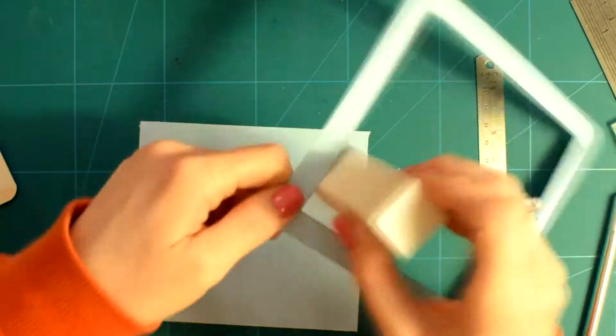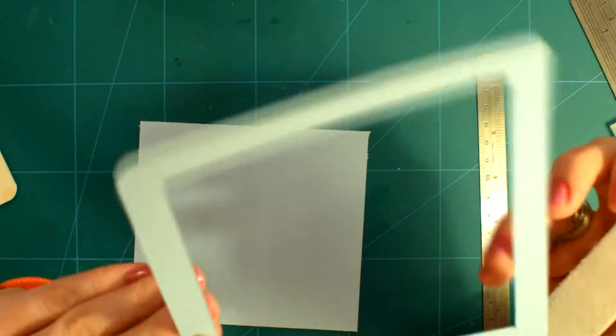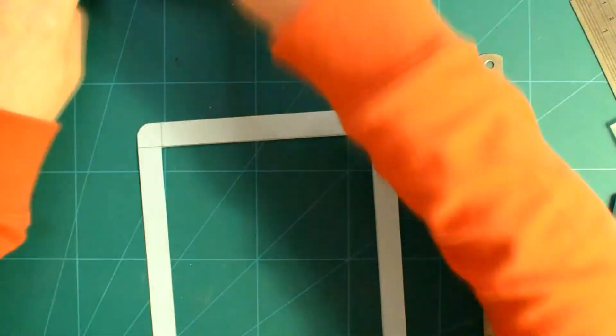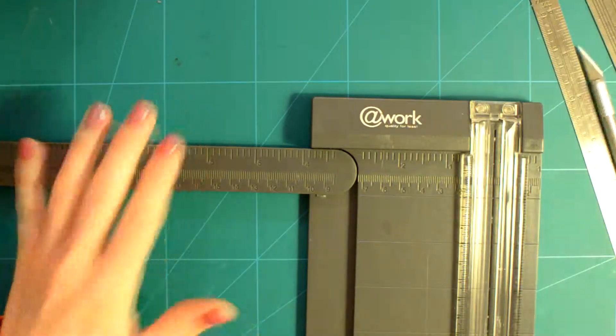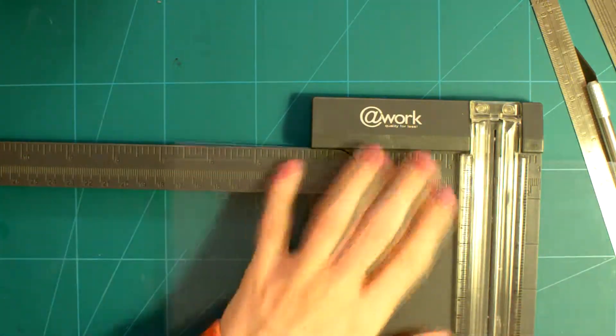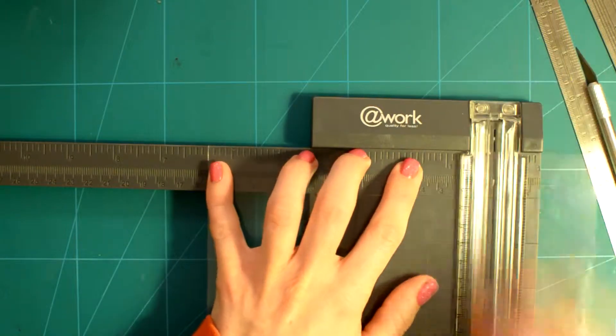I also sanded the inside edges of the window frame. I then cut the transparency sheet to the needed size for the window and rounded the corners once again.